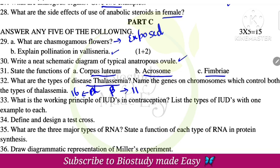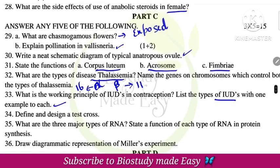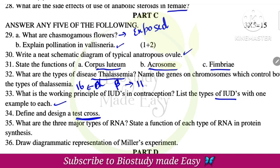IUD makes the uterus unsuitable for implantation and kills sperm. Types of IUDs are: non-medicated IUD, copper-releasing IUD, and hormonal IUD — these are intrauterine devices. Define and design a test cross — very very important. What are the three major types of RNA? They are mRNA, tRNA, and rRNA.